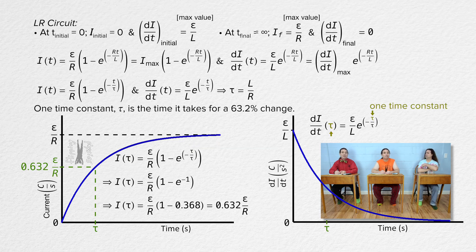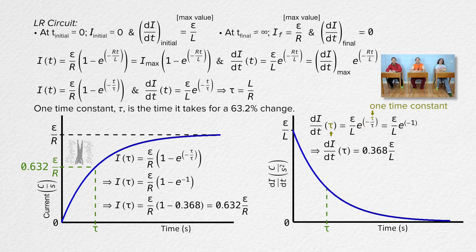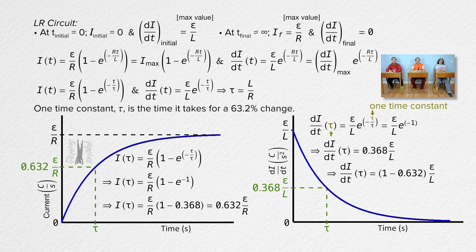And after one time constant of time has gone by, the time rate of change of current in this LR circuit equals EMF divided by inductance times e to the power negative 1. That means that after one time constant of time has gone by, the time rate of change of current in the circuit equals 0.368 times EMF divided by inductance. In other words, because 1 minus 0.632 equals 0.368, the time rate of change of current in this LR circuit has decreased by 63.2% from its initial maximum value.